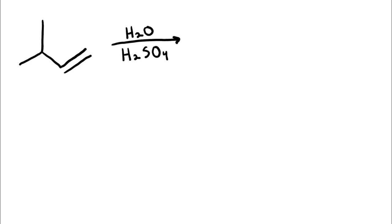When you have a strong acid and you put it in water, it's going to completely dissociate, and that means we're going to form a whole bunch of hydronium ion or H3O+. The way that forms is when the strong acid dissociates, it's going to protonate the water molecules to form H3O+. So the first thing I want you to do when drawing out the mechanism is show the H3O+, and we're going to use it when drawing out the mechanistic arrows.